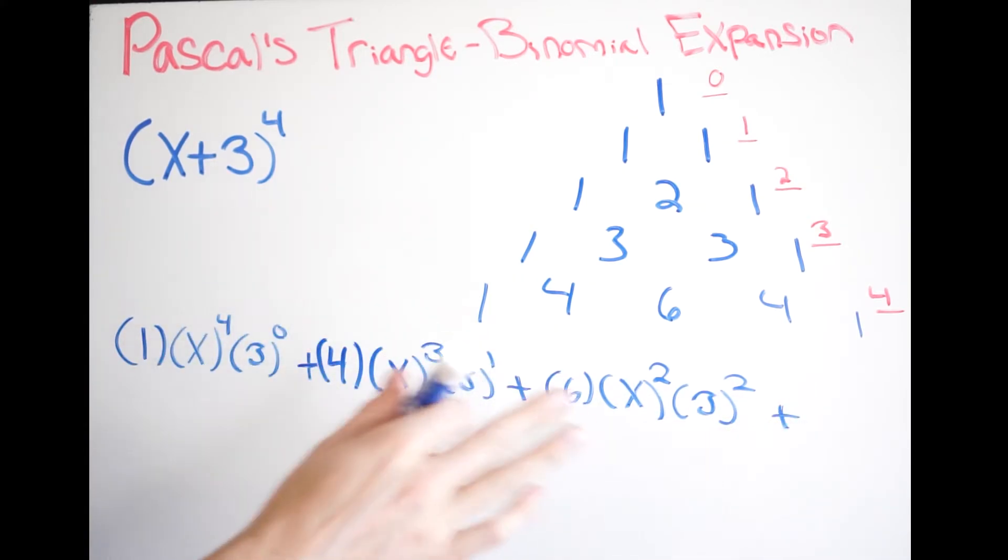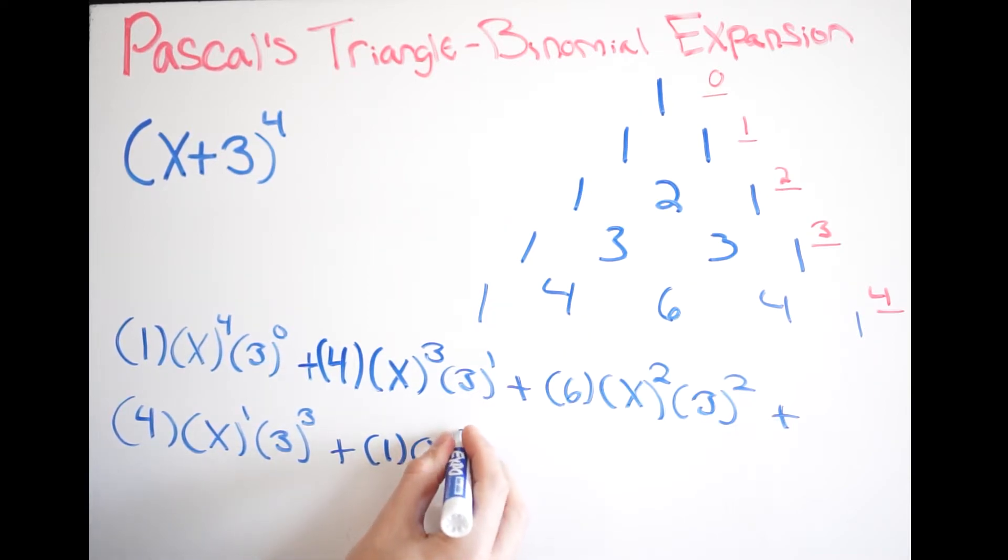Plus, let's wrap this. We're going to get four. That's my next coefficient. My first term is x. Again, it was two. Now it's one. And now this is going to be three. Add. And we get one. That's our last coefficient. And then we get x to the zero. And we get three to the fourth.